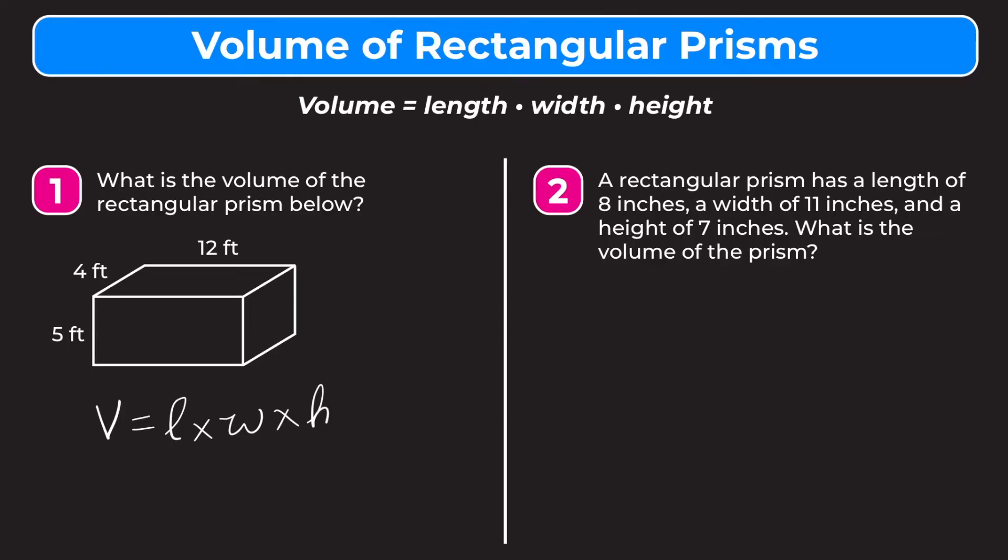I usually choose the longer side for length, that's just me, but again, it doesn't really matter. So let's rewrite this. We have V equals, so our longer side for me, that'd be 12. That'd be our length. Our width then would be 4, so 12 times 4. And our height would be 5.